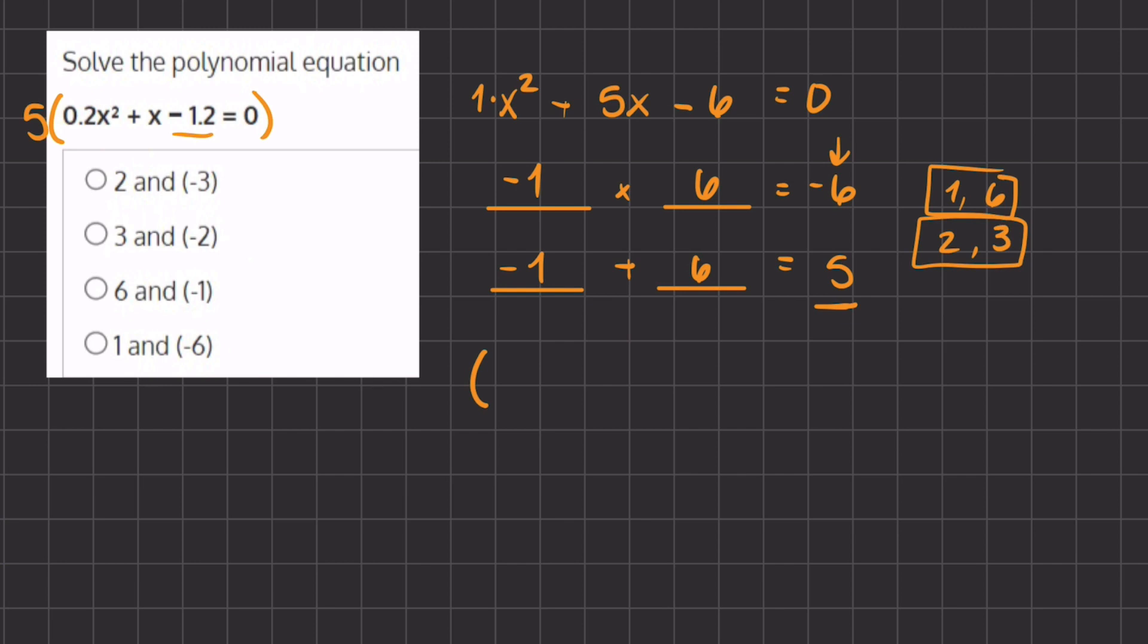Now that we have our two numbers that we are going to factor, we have (x - 1) and (x + 6). These are the two numbers that we chose to multiply to -6 and add to positive 5, and all this again equals 0.